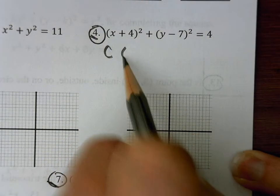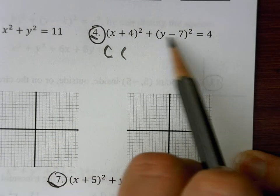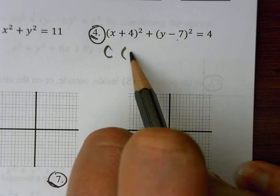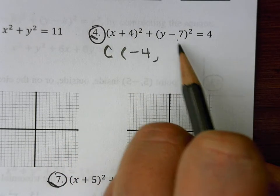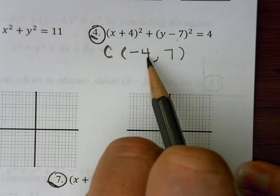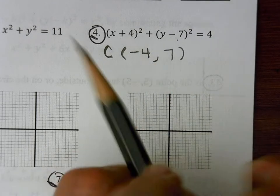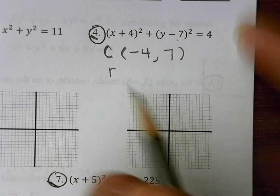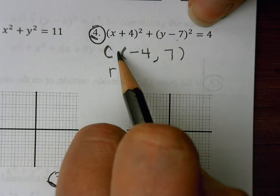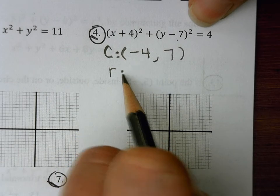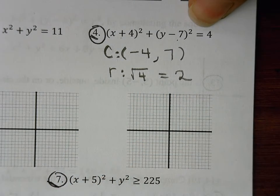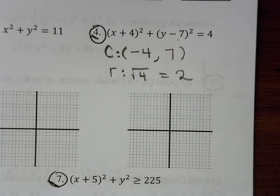To find my center, I want to do this in alphabetical order, so x before y. This is x plus 4, so I'm going to do the opposite, so negative 4. And then y minus 7, the opposite is positive 7. So my center is negative 4 and 7. For my radius, I look for my constant, which is 4, and I take the square root of 4, which is 2.